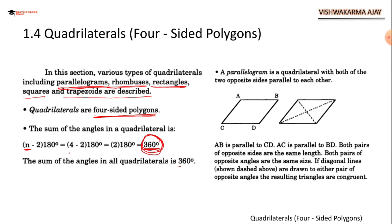A parallelogram is a quadrilateral with both the two opposite sides parallel to each other. Both the opposite sides are parallel to each other. Like side AB is parallel to CD and side AC is parallel to side BD. Both pairs of opposite angles are the same size. The opposite angles are equal. Like angle C is equal to B, D is equal to A.